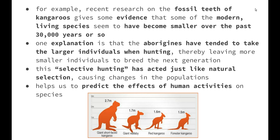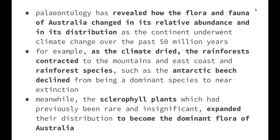Paleontology has revealed how the flora and fauna of Australia changed in their relative abundance and distribution as the continent underwent climate change over the past 50 million years. Abundance means how many, and distribution means where they're found. So over the past 50 million years, as Australia has become drier and warmer, we've seen a great change in where these organisms are found and how many of them are found in each place.